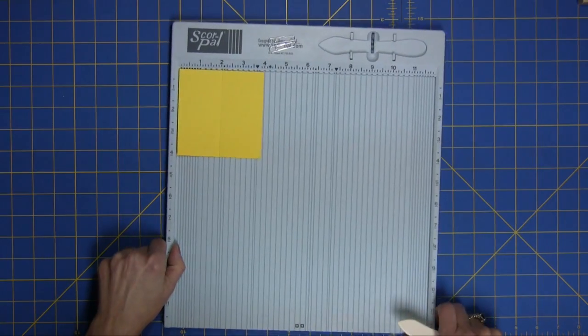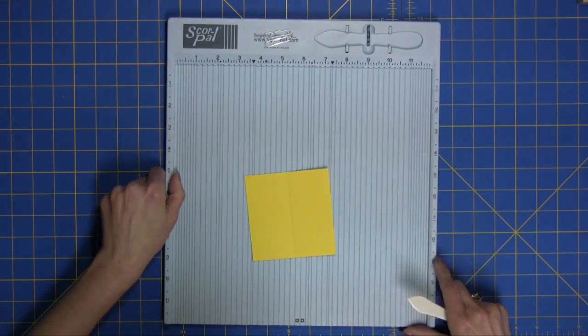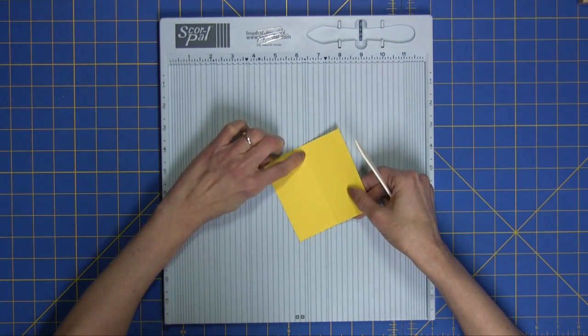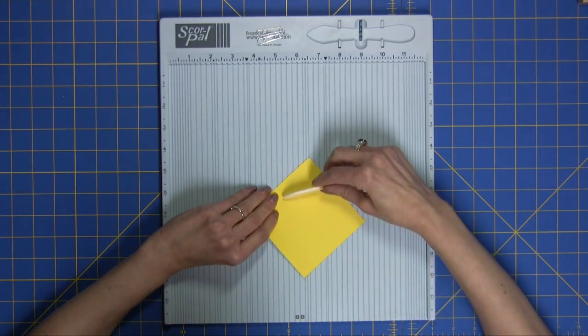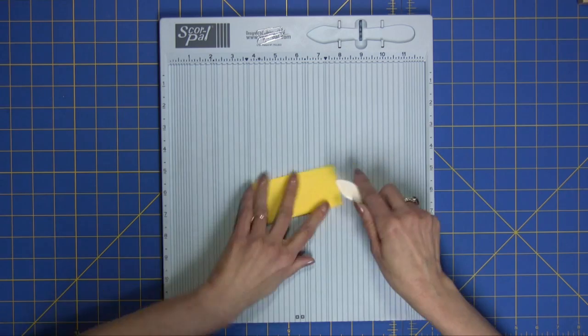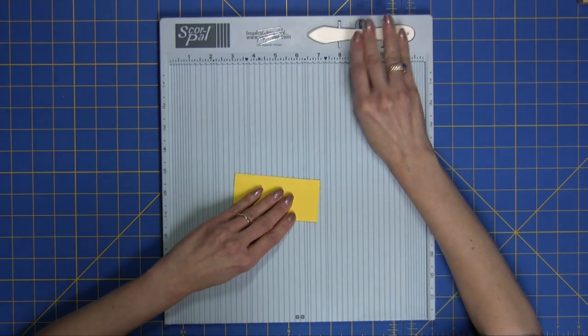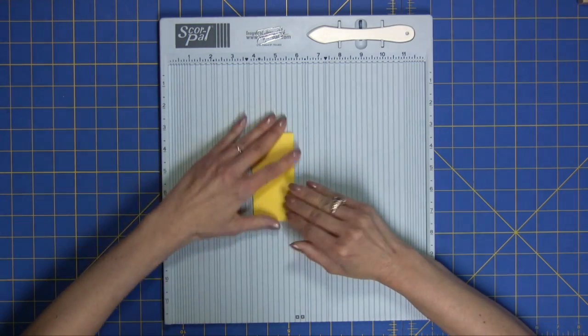I'm going to move this back. I don't want to be out of frame here. So you're going to move it back up and then the indentation stays on the outside and you can see the little bump. The bump goes to the inside and you score it and it gives you just a nice, nice fold.